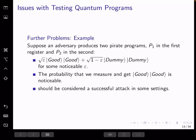And finally, we'll give one more example. So consider the following program entangled in such a way that with epsilon probability, we get both programs as good. With one minus epsilon probability, we get both programs as dummy. Since the probability that we measure and get good, good is noticeable, this program should probably be considered as a successful attack in some settings, which were not considered in the past definitions.